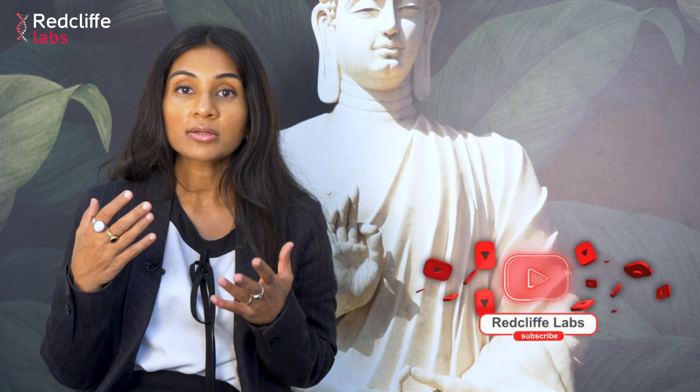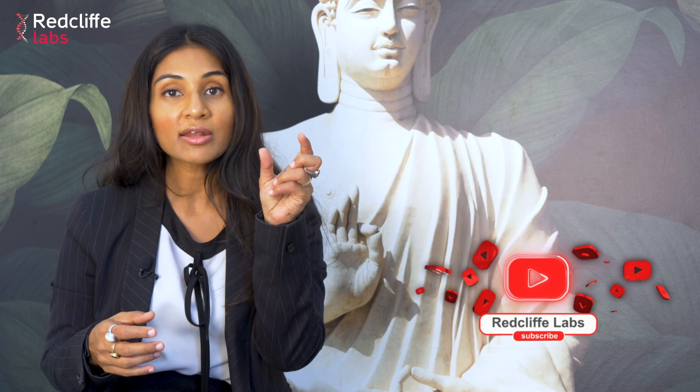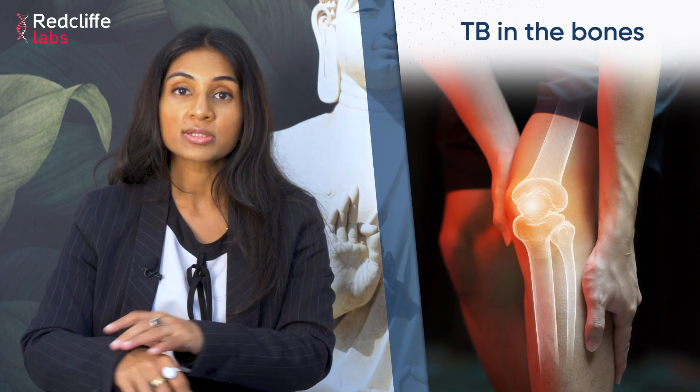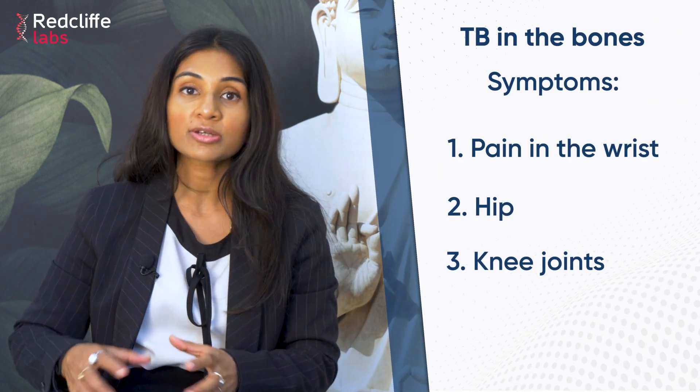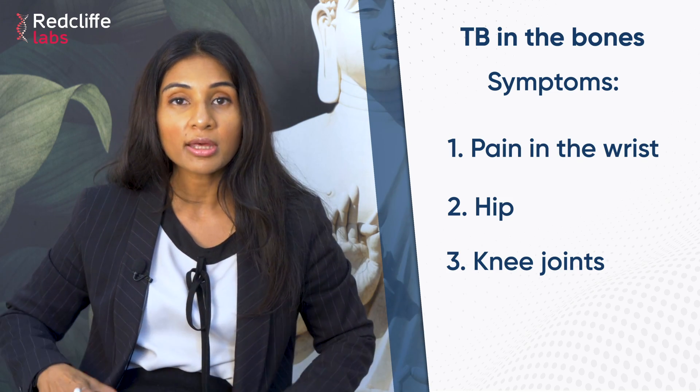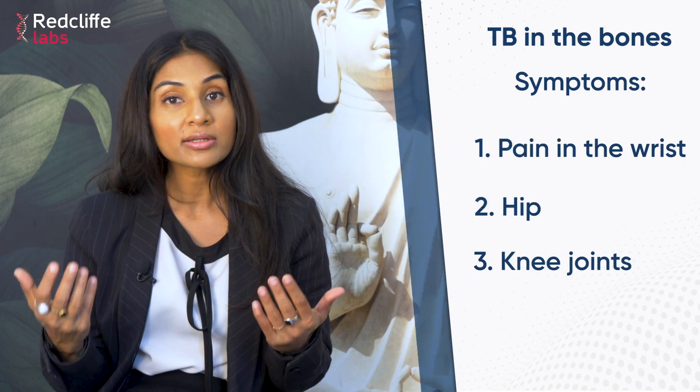A person can also present with backache, which at times is misdiagnosed and not treated for a long period of time. Backache can be due to spine involvement by the TB bacilli, known as Pott's spine or vertebral osteomyelitis. TB can also affect the bones — including the wrist joint and hip joint — so pain at the wrist, hip, or knee are other presentations of tuberculosis.